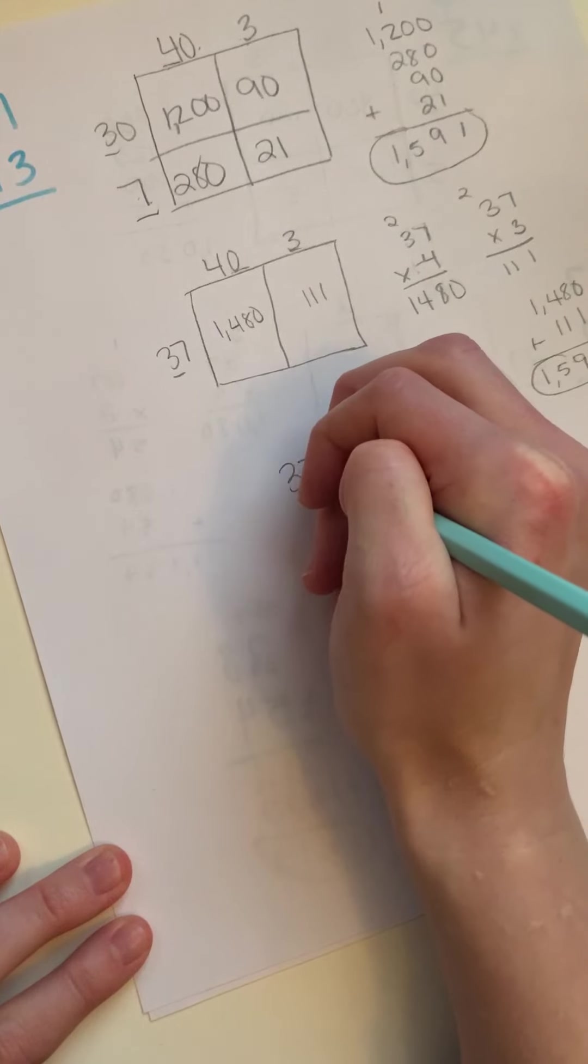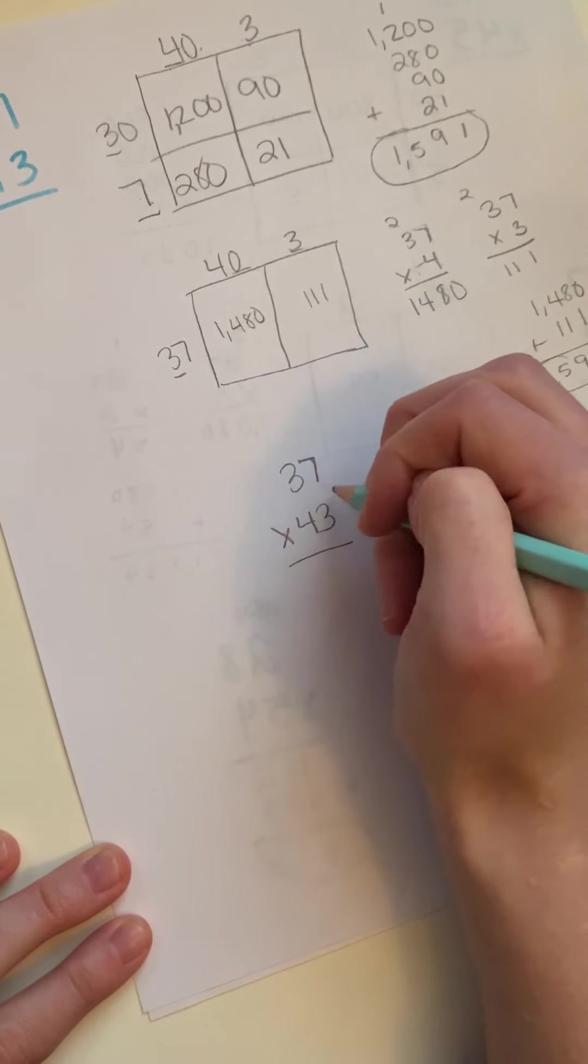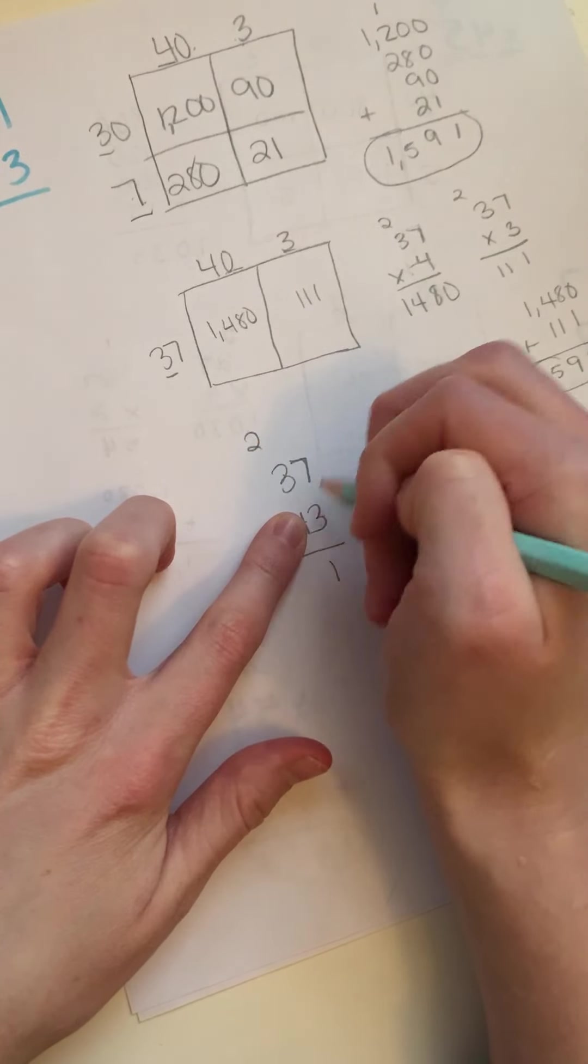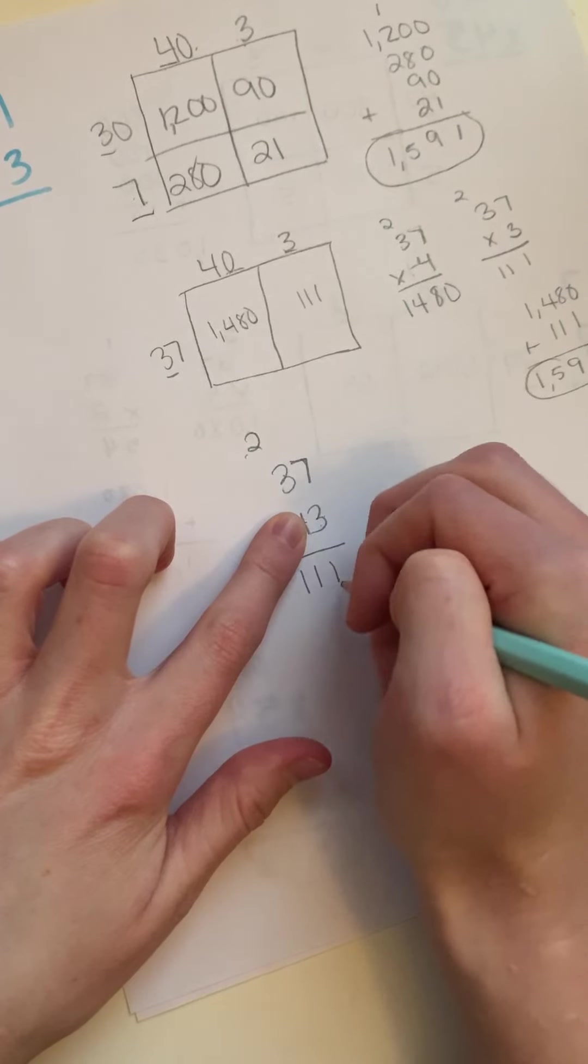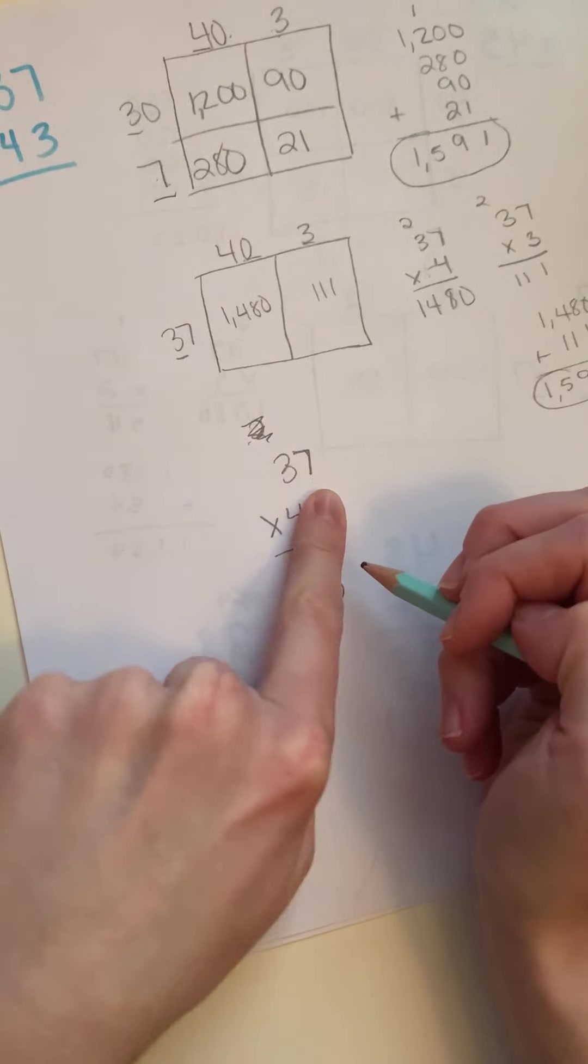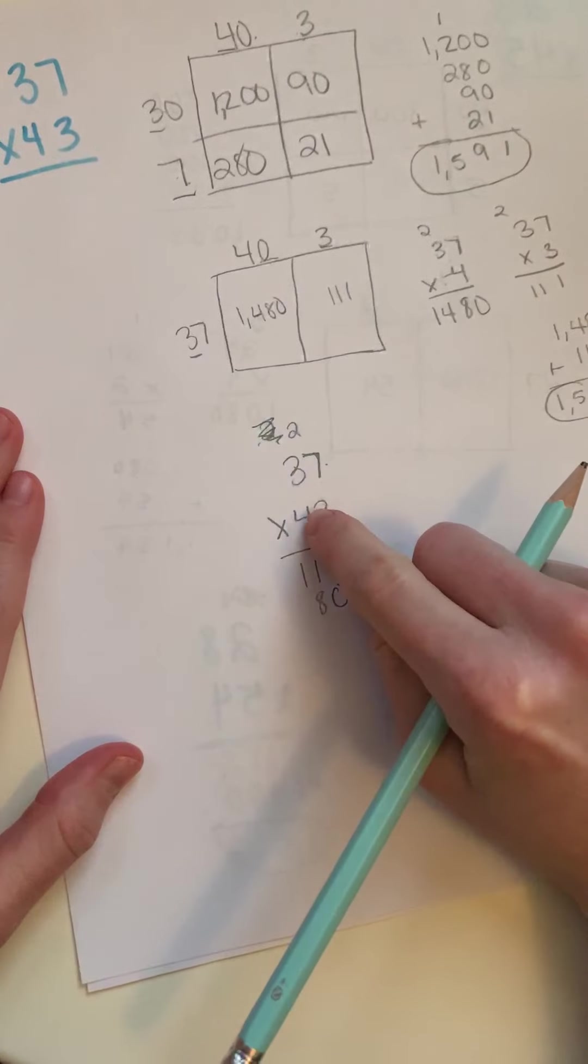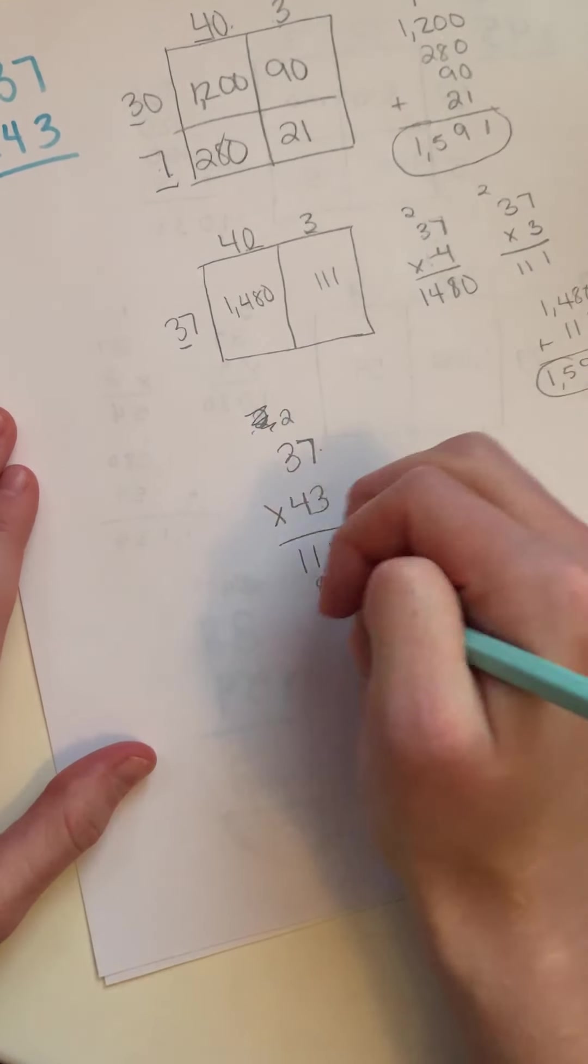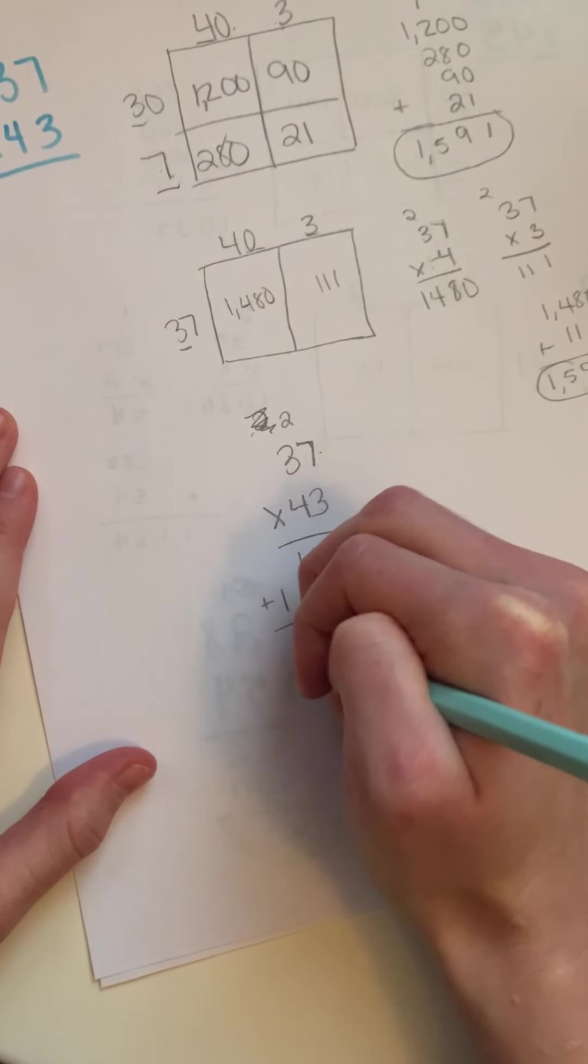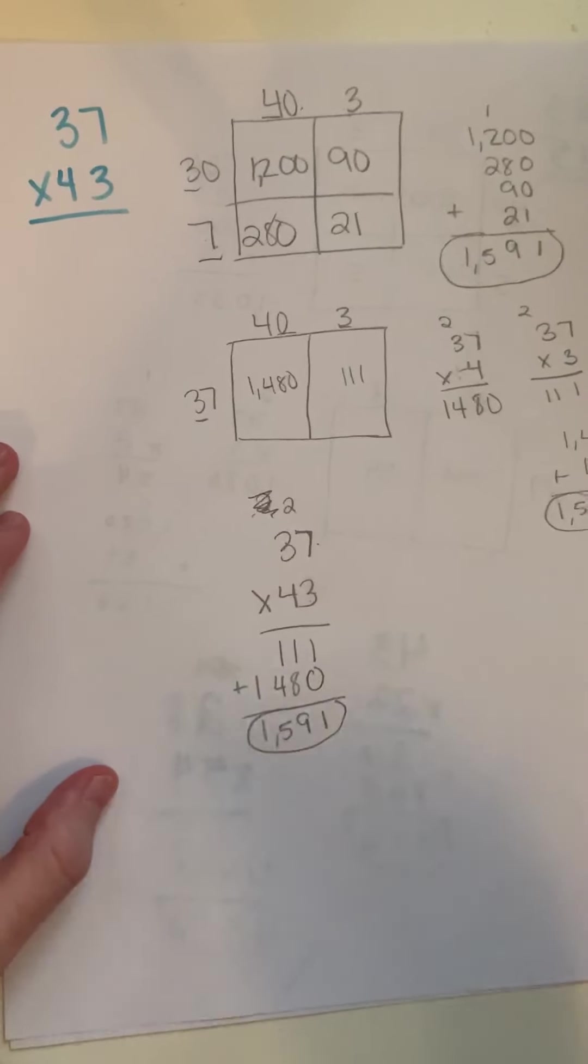And then my final method. The traditional algorithm. 7 times 3 is 21. 3 times 3 is 9. Plus 2 more is 11. Now I'm moving on. So I'm crossing that out. I'm going to put a 0 here because now I'm starting in the tens place. 4 times 7 is 28. My 2. 4 times 3 is 12. Plus 2 more is 4. 1,591. Like I said, any of these methods work.